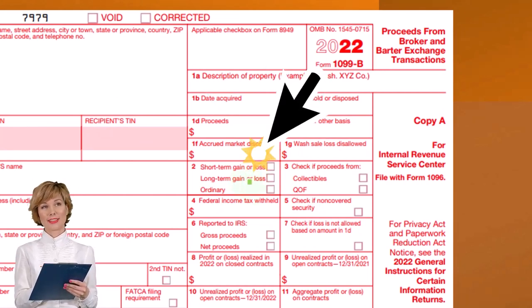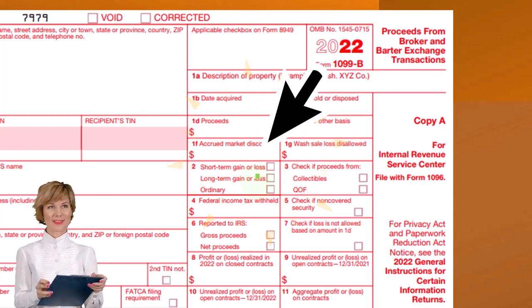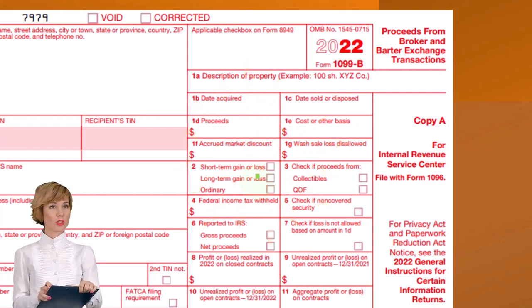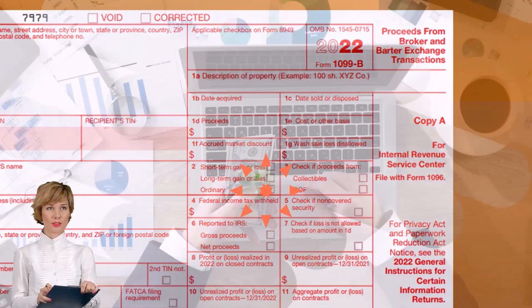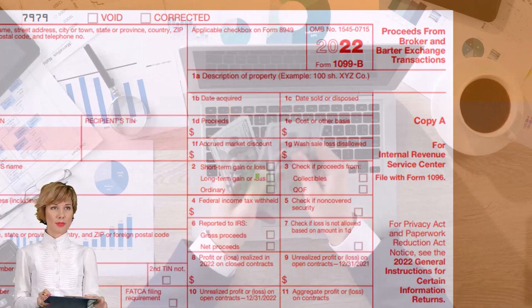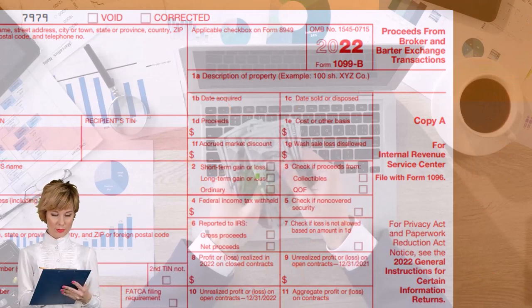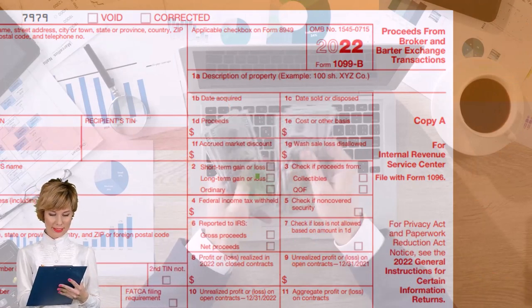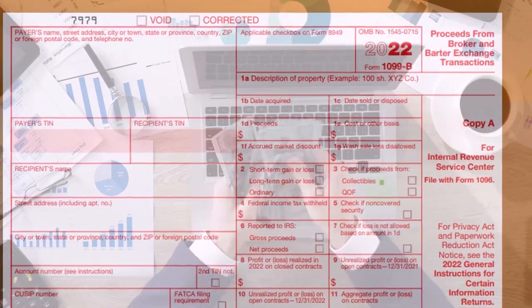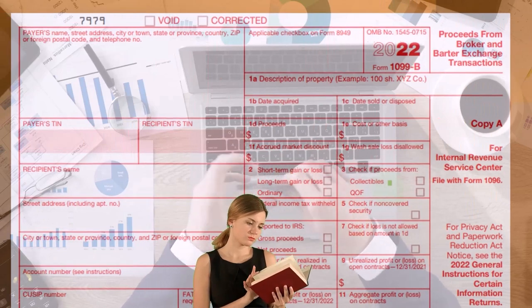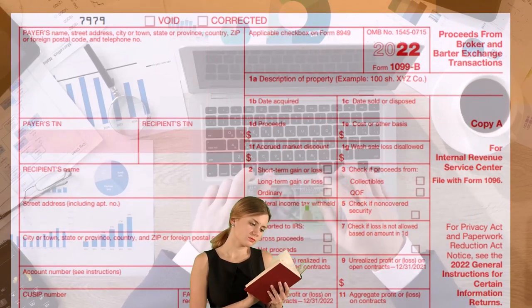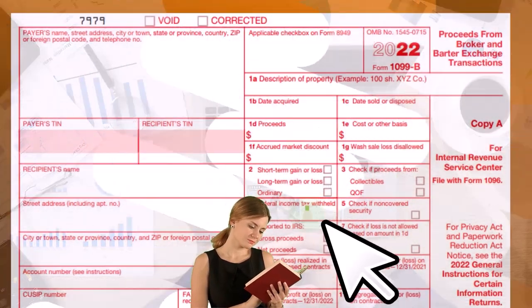Short-term and long-term will have differences in taxes. Generally, short-term is going to be subject to ordinary income tax rates, whereas long-term is going to be subject to capital gains rates, which are typically favorable rates. Also check whether they're collectibles or not.